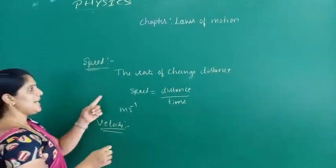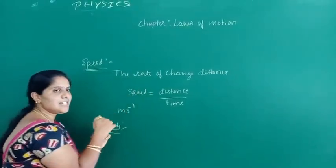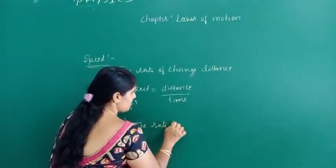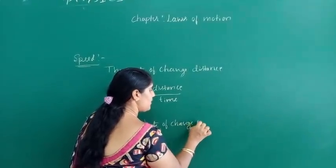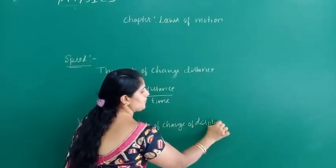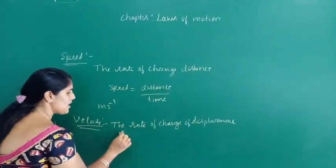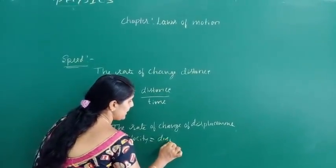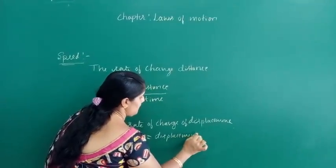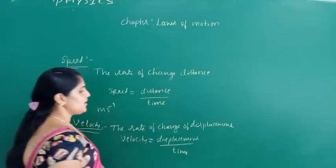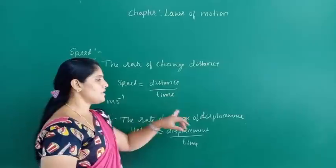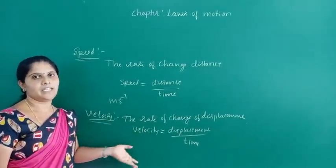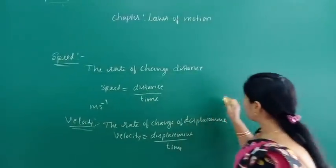Speed is the rate of change of distance, but velocity is the rate of change of displacement. Velocity is equal to displacement divided by time taken. Velocity is a vector quantity.